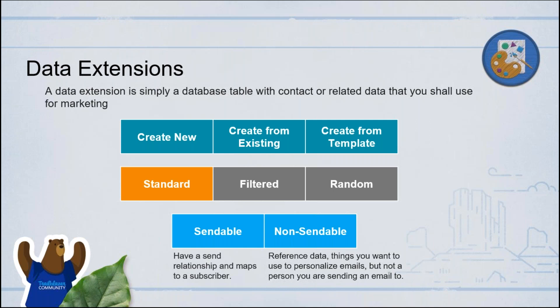There are specific data extension templates that Marketing Cloud provides, like a send log or a triggered send data extension — these have predefined fields already which need to be present, and then you can add additional fields. Most of the time you would actually be creating a standard data extension. There are two other types — random or filtered — which are more for segmentation. For example, if you have a data extension with a bunch of contact records and you want to filter them out based on some criteria, or randomly take a small segment, you can create that as well.